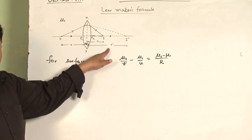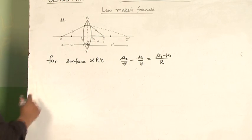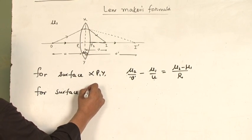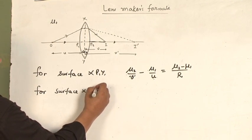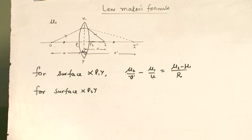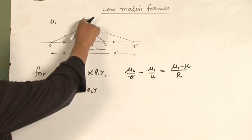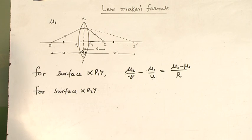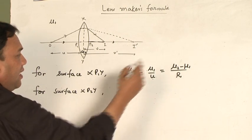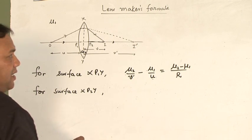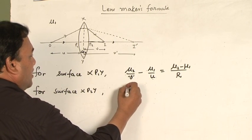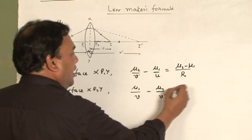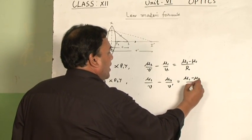v' is the image distance, but actually the second surface is also present. So for surface XP2Y, when refraction takes place at the second surface, I dash will be the object and I will be the final image. Again using the refraction formula for the second surface, I write: μ1/v minus μ2/v' equals (μ1 minus μ2)/r2.